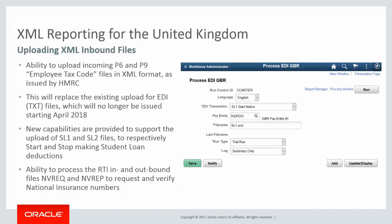HMRC will be decommissioning the Electronic Data Interchange channel and replacing it with an existing XML service. Current EDI users will need to migrate to the XML channel by the start of fiscal year 2018-2019. Incoming XML files, such as P6, P9, SL1, and SL2 notices, as well as NVREP, will be supported.